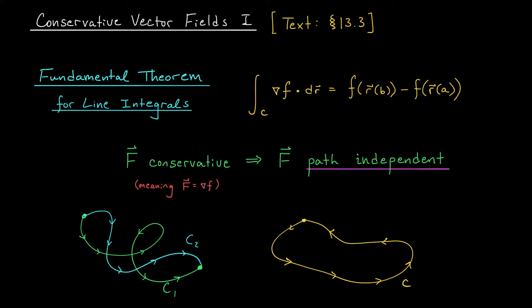Stated a little differently, the Fundamental Theorem gives us a nice way to evaluate line integrals of conservative vector fields — these are the vector fields that can be written in the form gradient of f. As an immediate consequence, we saw that every conservative vector field is automatically path independent. If you have two paths that start at the same point and end at the same point, then you can compute the line integral along either path. Since the endpoints are the same, the line integrals will have the same value.